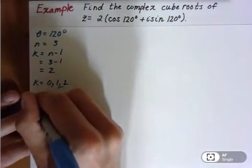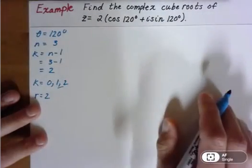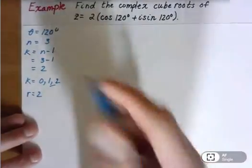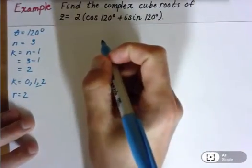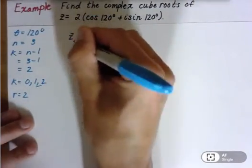I know my r is equal to 2. So I have all this stuff listed here on the left, which is really good. So if I wanted the general form of z sub k, whatever my k value is, let's look.